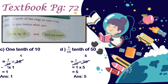In question number C, one tenth of 10. One tenth means one by ten, multiplied by ten. Ten is our bottom number and ten is our upper number, so we divide ten by ten. The answer is 1, then one multiplied by one equals one.